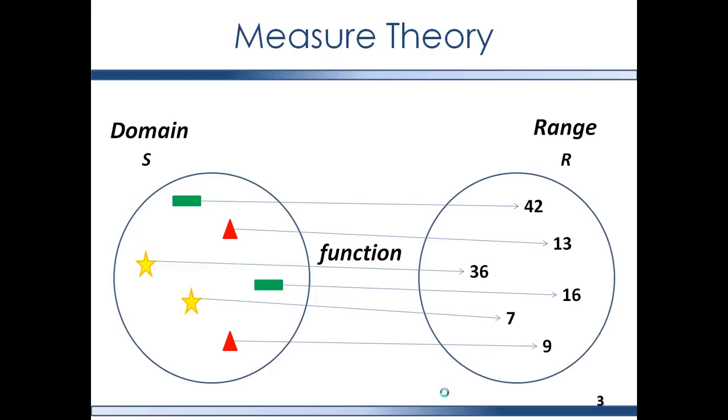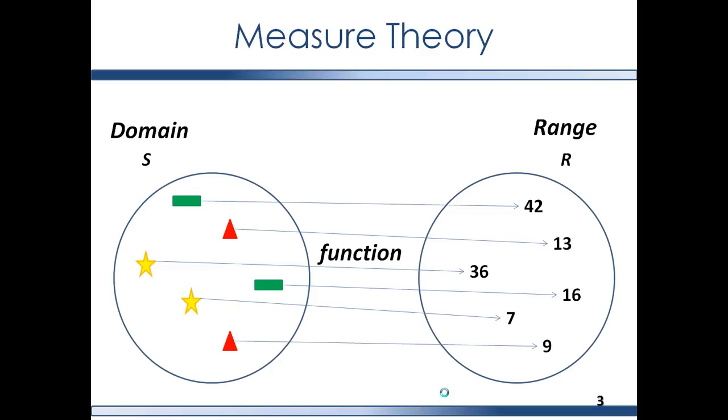The connection from domain to range is between the elements in each set, and starts from an element in the domain and connects that element to an element in the range. In this picture, some elements in the range have more than one element from the domain mapping to it, or one element in the range is associated with more than one element in the domain. And that is okay. For example, 36 has three elements from the domain mapping to it.